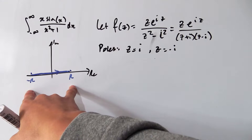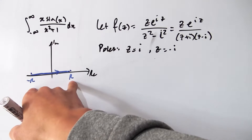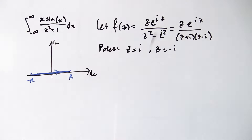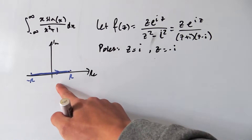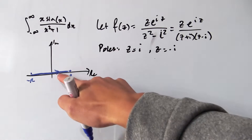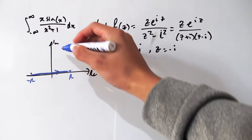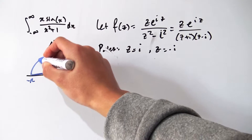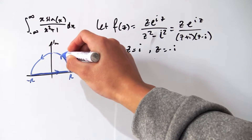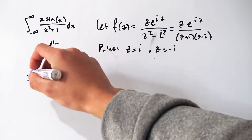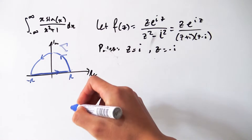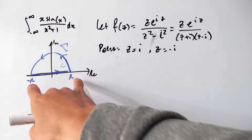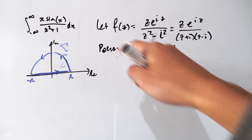If we integrate across this path and take the limit as R approaches infinity, we get the integral we want. To use contour integration we need to close the path, so once we reach R, we go over the positive half of the complex plane to complete the semicircle. I'll call this bigger arc gamma, and the whole entire closed contour C.